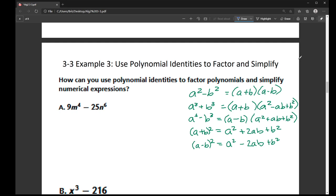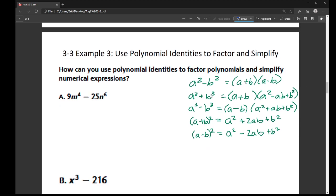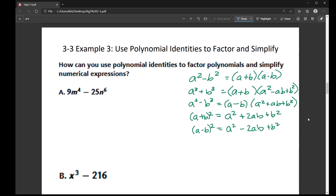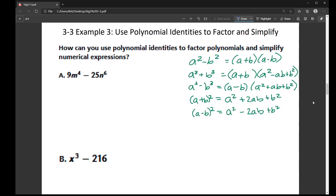So in this example, we are using the polynomial identities to factor and to simplify. What I've done is here in green, I have actually written down the polynomial identities that come to mind. I recommend having a formula list somewhere in your notes so that you could quickly reference these formulas.